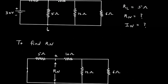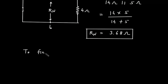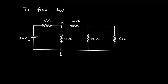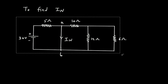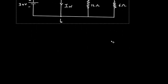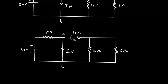Next we have to find In. To find In, we have to remove this RL first, then we have to short-circuit the terminal A and B — that is, we have to short-circuit RL. The current flowing through this short circuit will be our In, that is Norton's current. Here we can see this 10 ohm is in series with 12 ohm parallel with 6 ohm, and it is short-circuited from here to here. Since its value will be 0, we can remove these resistors.